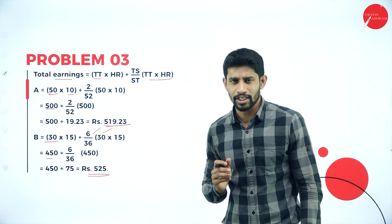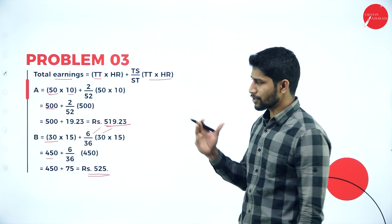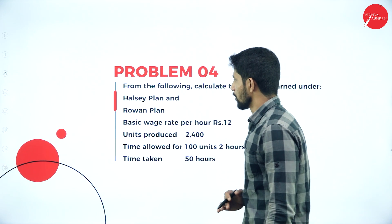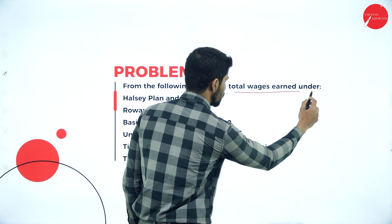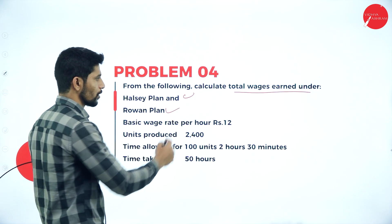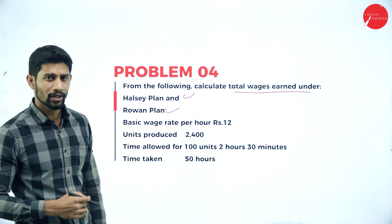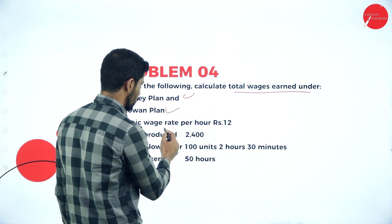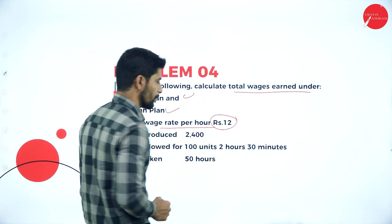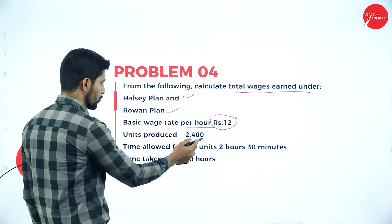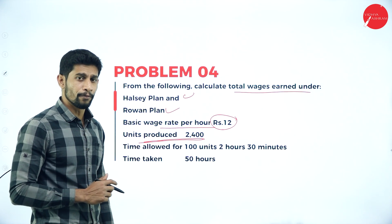When the standard time is not given, we find it out as just demonstrated. Moving on to problem number 4: from the following, calculate total wages earned under Halsey plan and Rowan plan. Basic wage rate per hour is 12 rupees and units produced is 2400 units.